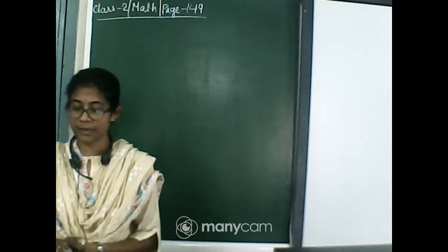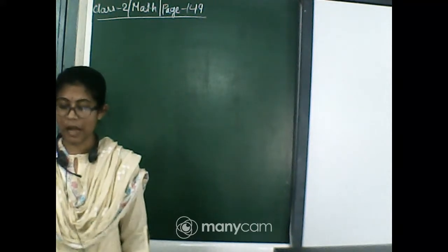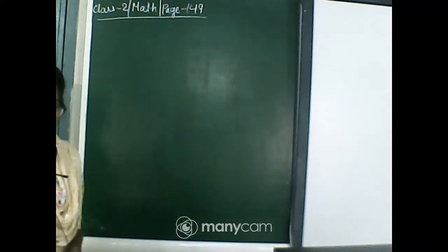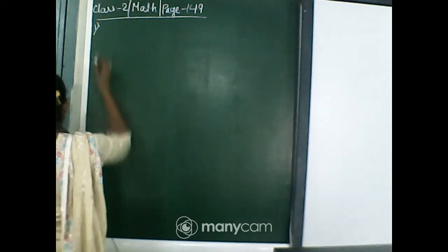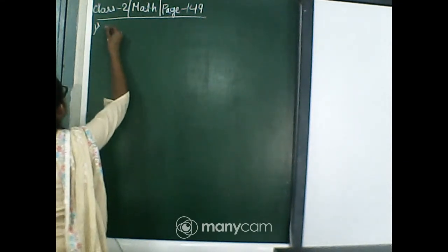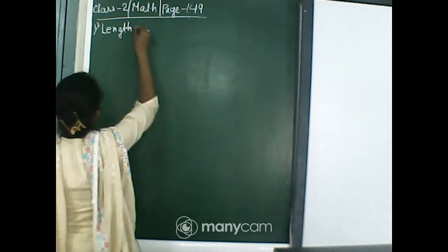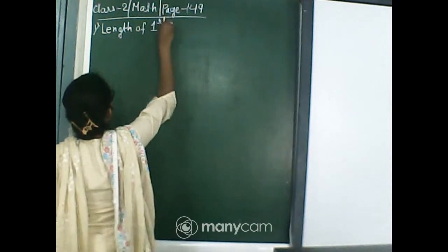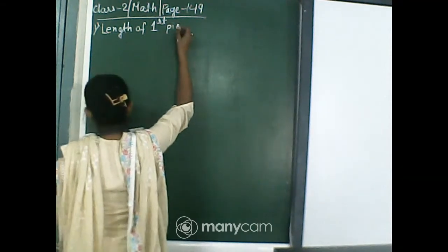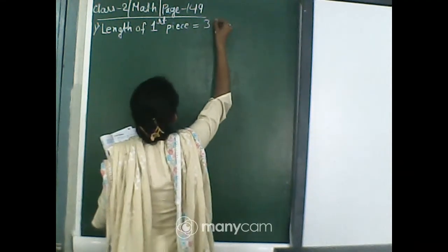That means we can see that Swati brought 3 pieces of ribbon of different lengths. And now they are asking that in total how much ribbon did she buy in all. So what we can write is length of first piece is equal to 38 cm.